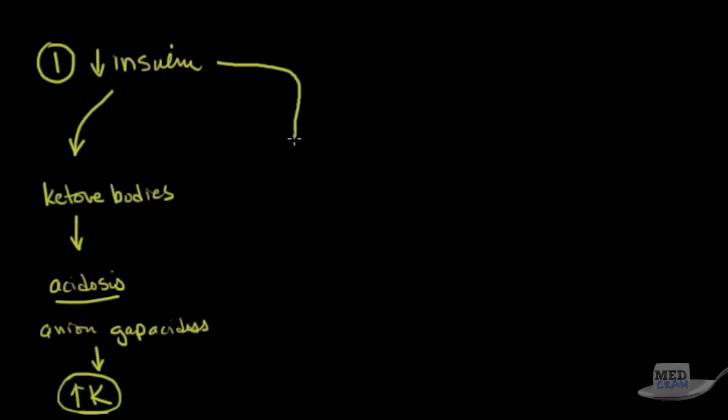Now decreased insulin also leads to high glucose. High glucose is going to lead to dehydration. And why is it going to do that? Well, because the glucose levels become so high that they exceed the reabsorption threshold in the kidneys. And so what you get then is an osmotic diuresis.